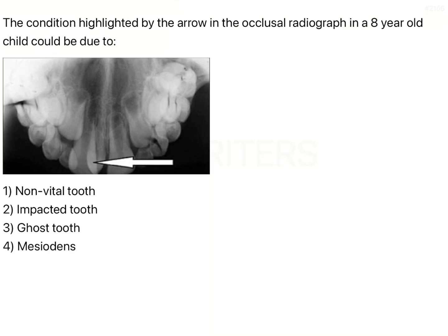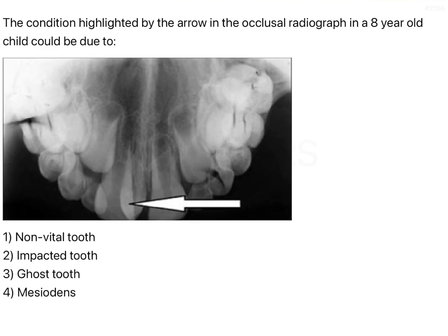The question is: the condition highlighted by the arrow in the occlusal radiograph in an 8-year-old child could be due to? So I am enlarging the image, and what you can see is that you have the central incisors which are still in the process of forming, because the apex formation is not complete. Both the right as well as the left central incisors are visible.